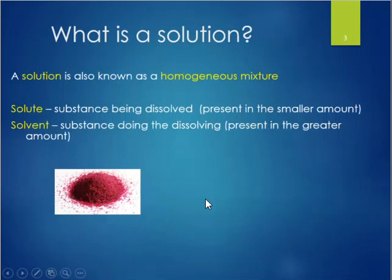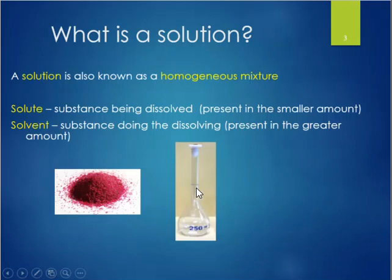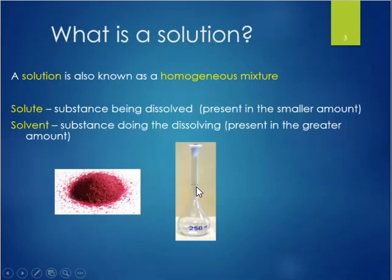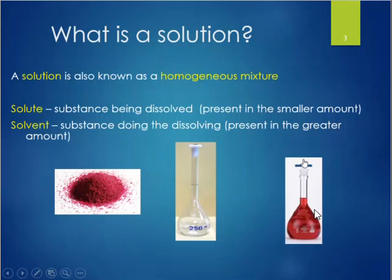The solvent is usually the substance present in the greater quantity and it's going to do the dissolving. Our solvent is water, held in a volumetric 250 mL flask. To make the solution, we insert the solid into the flask — ideally using a funnel to avoid spilling — then add water up to the 250 mL calibration line. Once mixed, we end up with a red-colored uniform solution that looks the same throughout. This is a simple example of how to make a solution in the lab.